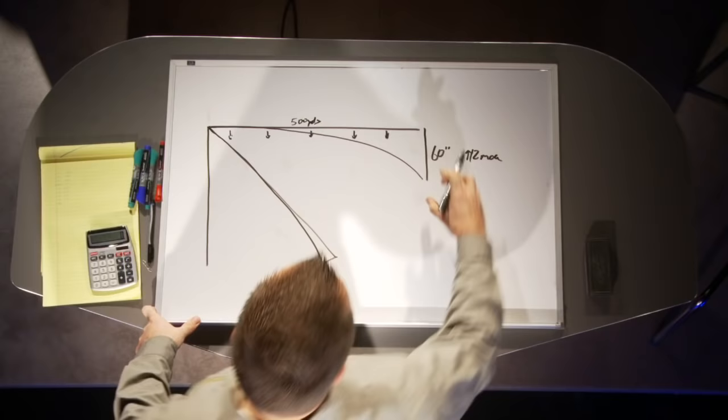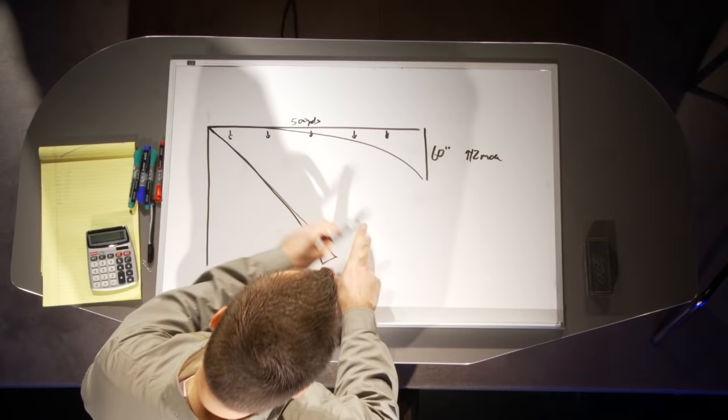Here's the problem. If I'm shooting 500 yards at this angle and I just look at my dope book and see I need to come up 12 minutes for 500 yards, I'm going to miss over the target. This 60-inch adjustment is too much. If I adjust up 60 inches, I'm going to miss way over the target. I need to take a smaller elevation adjustment.